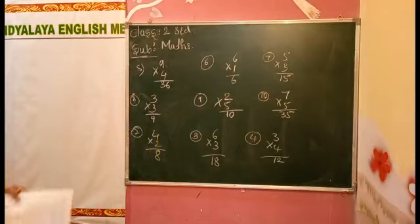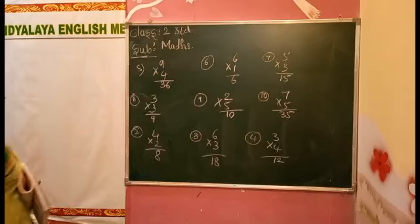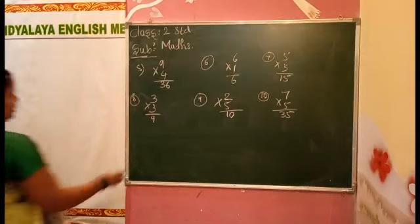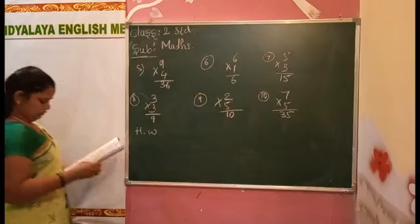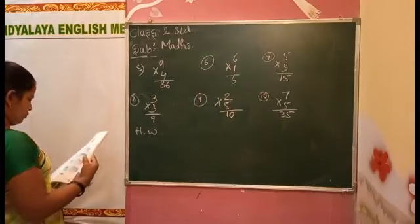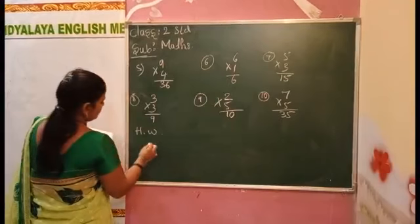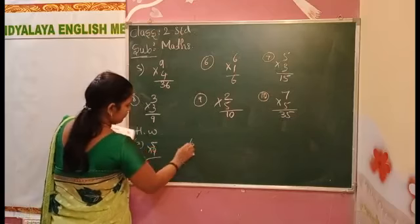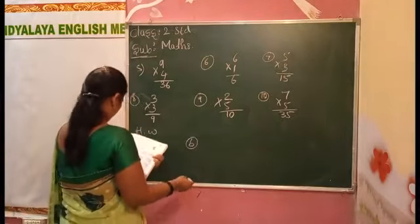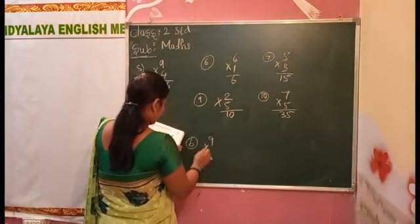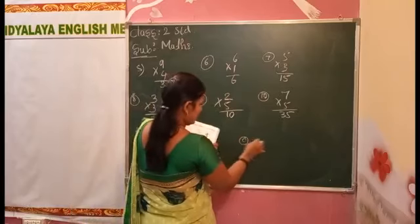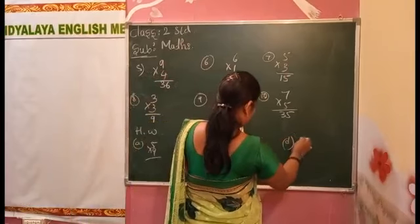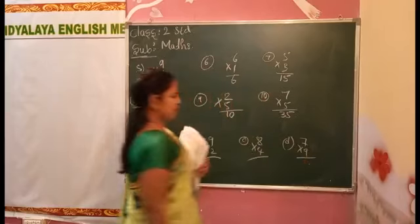Now pick up and take down homework. You have to solve that. A: five sixes. B: nine eights. C: eight fours. And D: seven nines. Okay, only four.